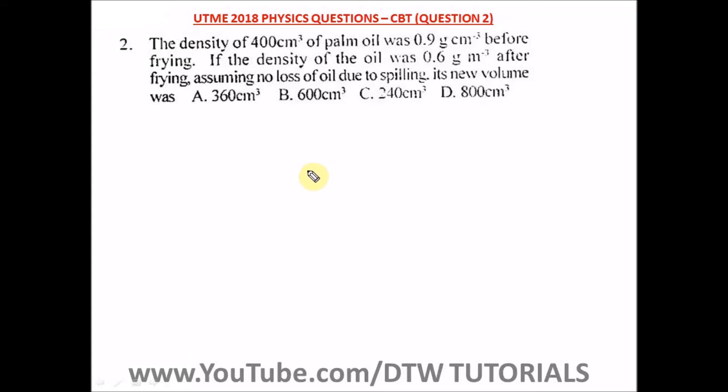Question two of the UTME 2018 physics past question. That's your JAMB 2018 physics exam. The density of 400 centimeter cube of palm oil was 0.9 gram per centimeter cube before frying. Okay, this is the first density.